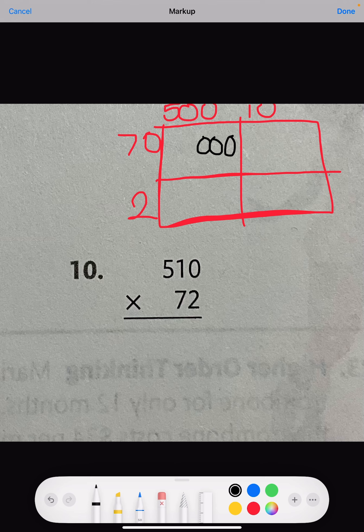Next, we're going to multiply 5 times 7. 5, 10, 15, 20, 25, 30, 35. So we're going to put 35 here.